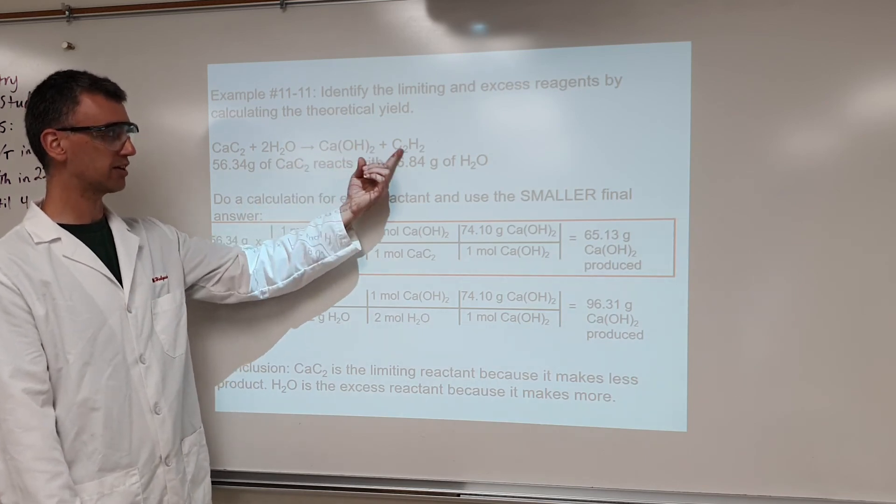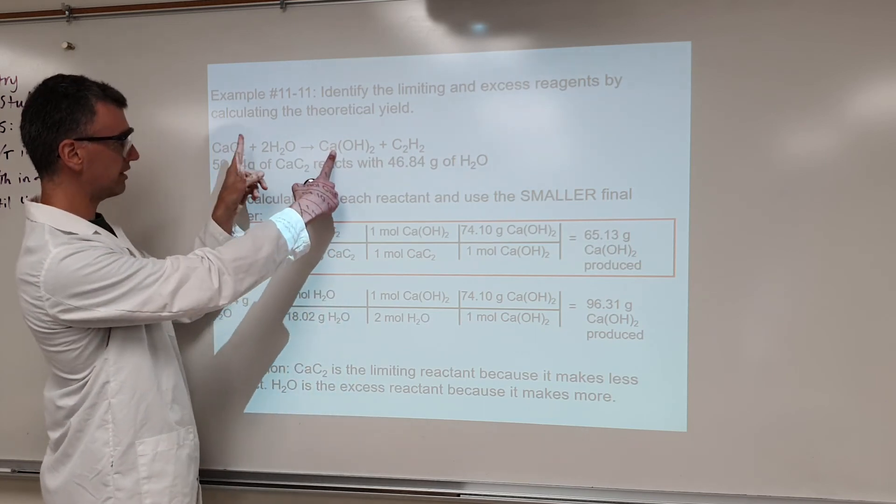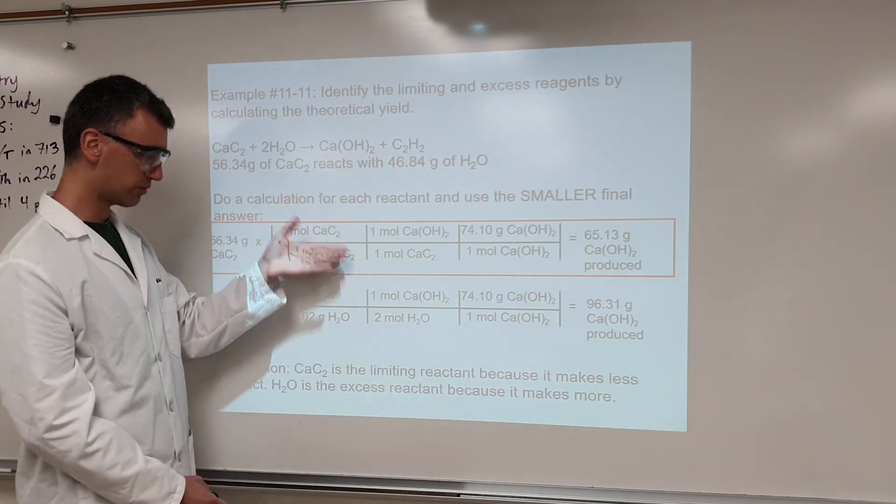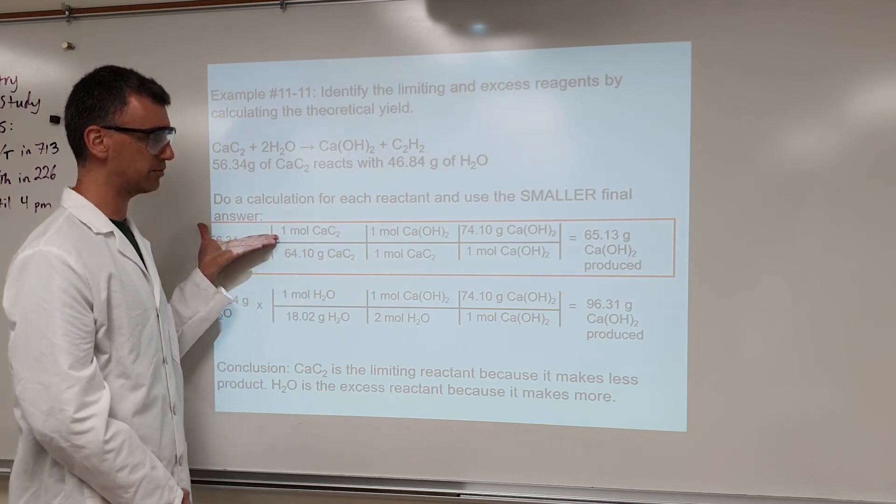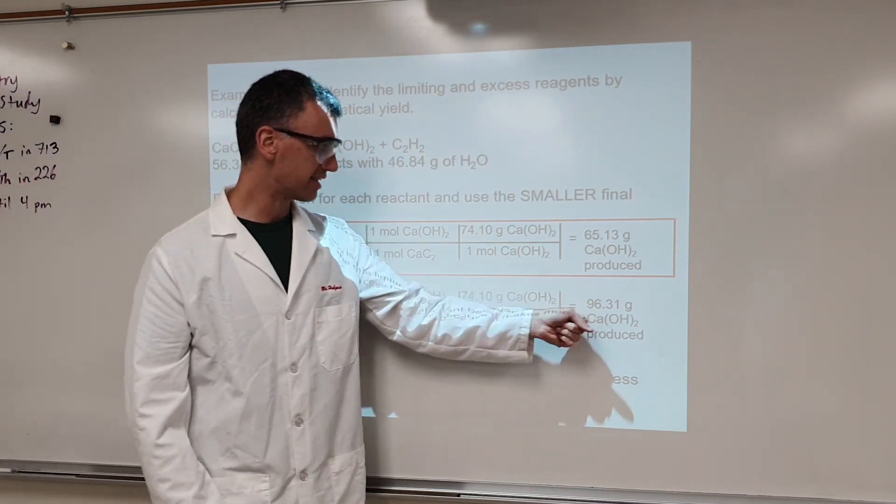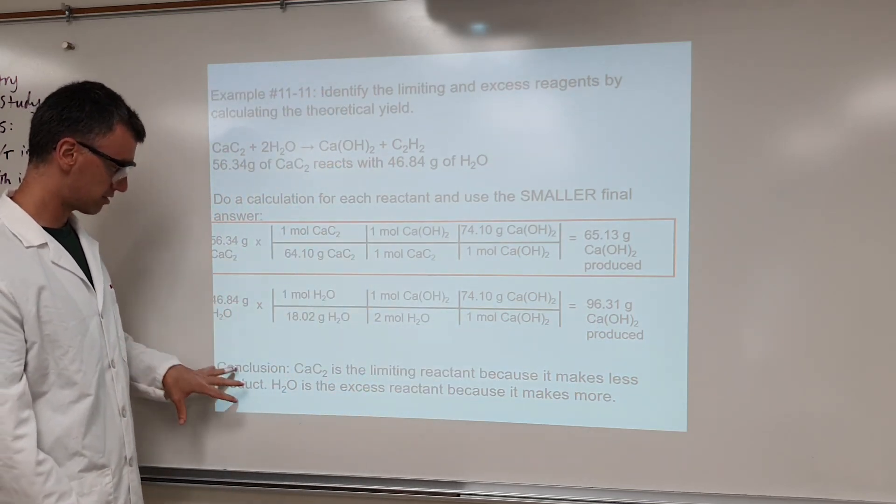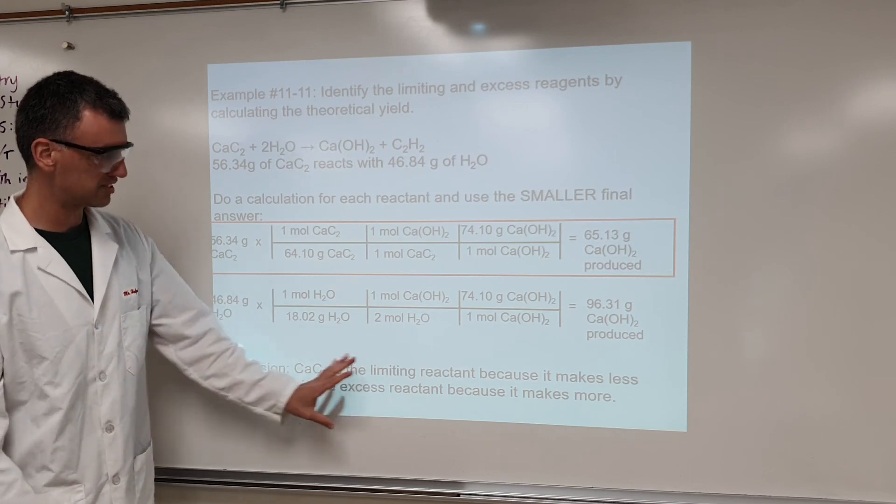What I did here was that I just randomly picked the product, for no good reason I picked this one, I could have done this one too. I just figured out how much of this will this chemical make, and then how much of this will this chemical make, and then whichever one makes the smaller amount, that's my limiting reactant. Whichever makes the greater amount, this reactant becomes the excess reactant, so that's the excess reactant right there, the H2O, and that's why I've got this conclusion statement right here.